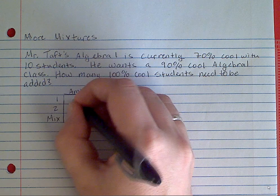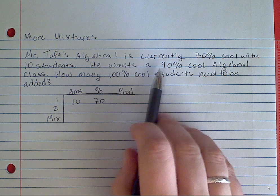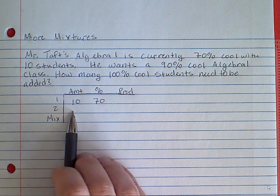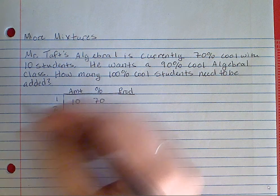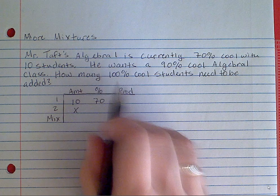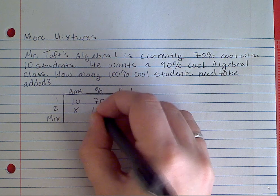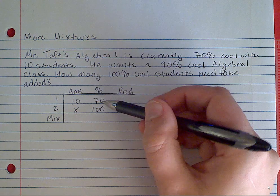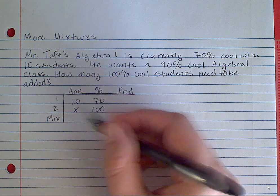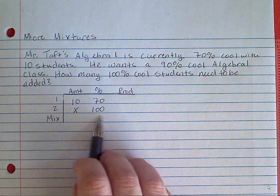The amount is 10, the percent is 70. Now I want to have a 90% cool Algebra 1 class. I don't know how many 100% cool students I need to add, but since I don't know, the amount of thing 2 is x, and I'm adding 100% cool students. So my percent for thing 2 is 100%. I'm taking thing 1 and adding to it thing 2, and I'm going to get the mixture. What do I want the percentage of the mixture to be? I want it to be 90.